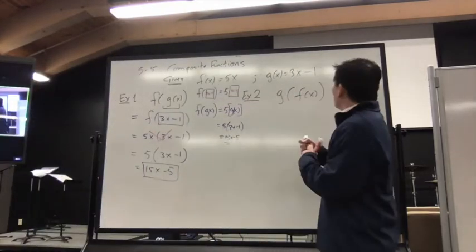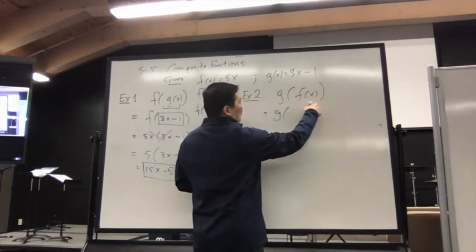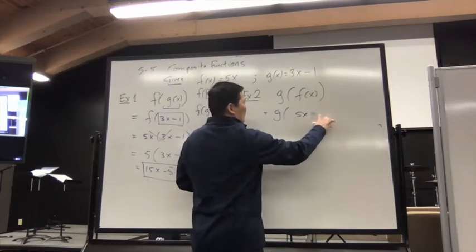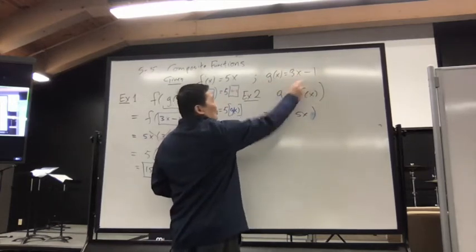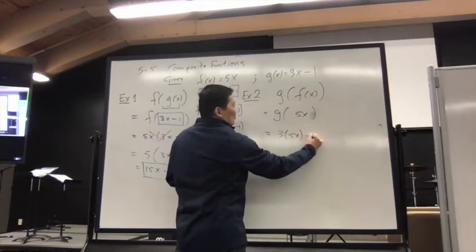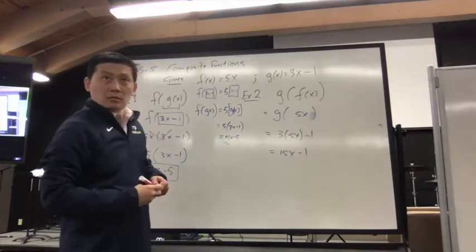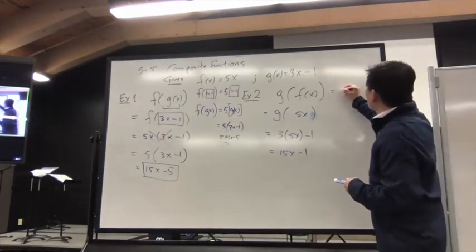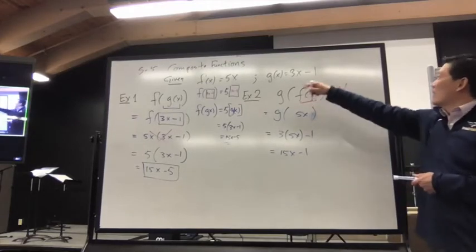Now we go to G of F of X. Again, inside out — when it's outside, we don't touch it, we replace it. F of X is 5x. When you take 5x and put it into X for G, because this is on the G, it becomes 3 times 5x minus 1, so it's 15x minus 1.